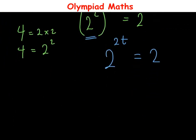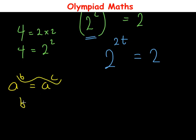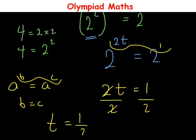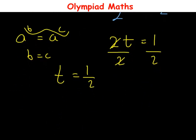Applying the rule that if a raised to power b equals a raised to power c with the same base, we compare the exponents b equals c. The right-hand side is just 2, which is 2 raised to power 1. Since we have the same base, we compare the exponents: 2t is equal to 1. Dividing both sides by 2, the value of t is equal to 1 over 2.